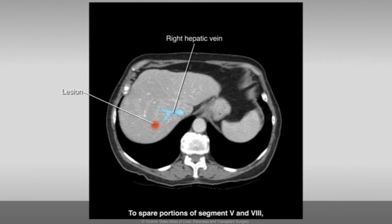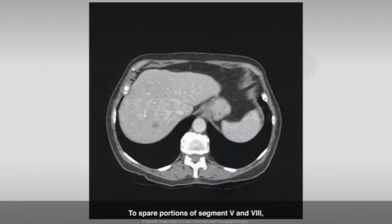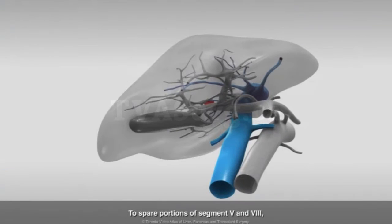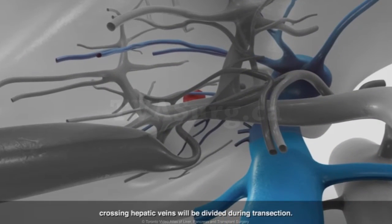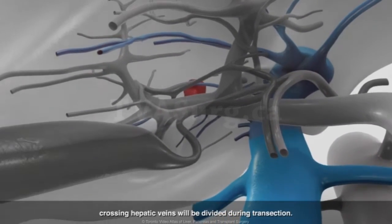To spare portions of segments 5 and 8, crossing hepatic veins will be divided during transection.